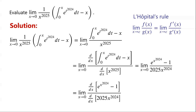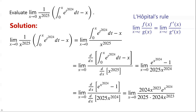The derivative of e to the power of x to the power of 2024, minus 1, with respect to x, is equal to 2024 times x to the power of 2023, times e to the power of x to the power of 2024. The derivative of 2025 times x to the power of 2024 with respect to x is equal to 2025 times 2024 times x to the power of 2023.